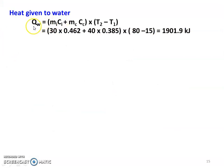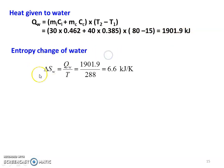Heat given to the water: Q_W = (M_I × C_I + M_C × C_C) × (T2 − T1) — the heat loss by the two blocks, the iron block and the copper block. So, (30 × 0.462 + 40 × 0.385) × (80 − 15) = 10901.9 kJ. This is the total amount of heat given to the water. Change in entropy of the water: delta S_W = Q_W / T = 10901.9 / 288 = 6.6 kJ per Kelvin. The water is a sink, continuously absorbing heat energy without a change in temperature.